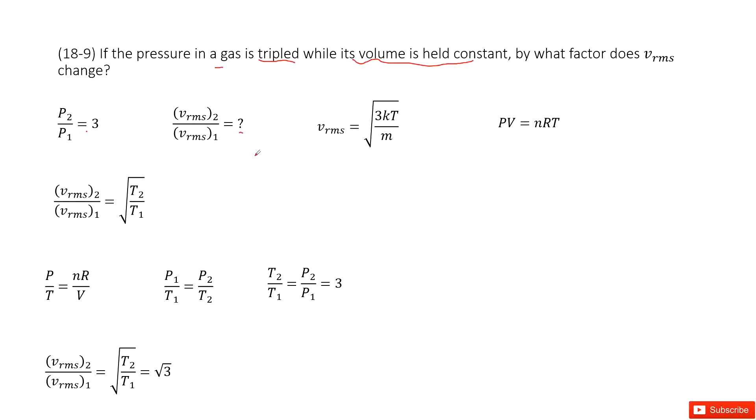Now we can consider what is the rms speed. We can find the function in our textbook: the root mean square speed is square root of 3kT divided by mass. M is a constant because this gas is fixed. It looks like the only variable is T, the temperature.